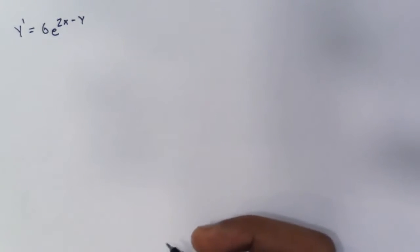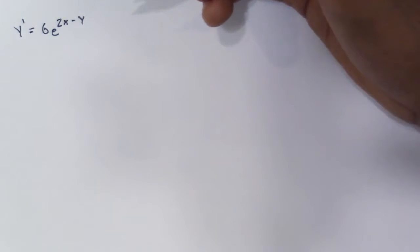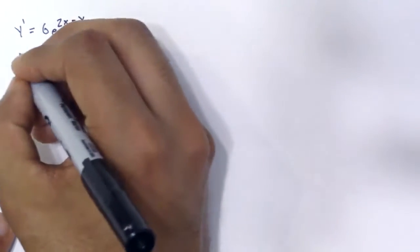We're doing a separable differential equation, but this one's kind of tricky because it doesn't look separable at first. So how do I solve this? We're going to start with the first step of rewriting...